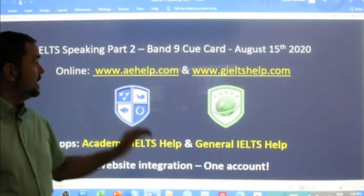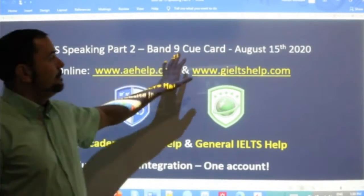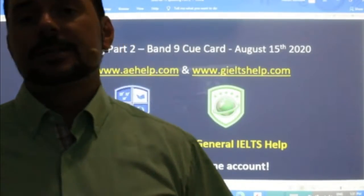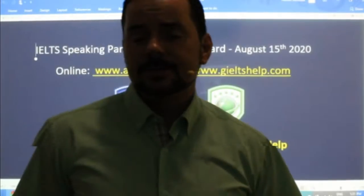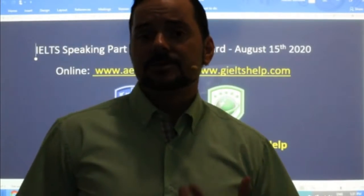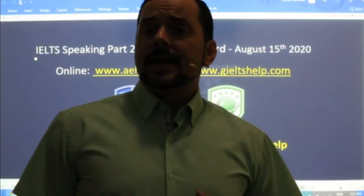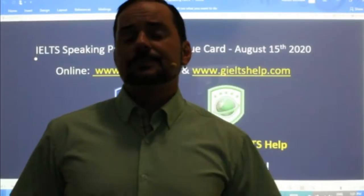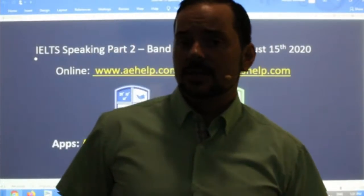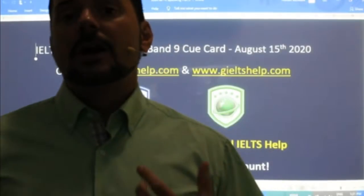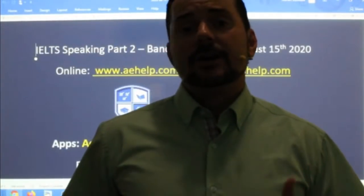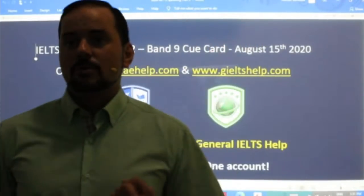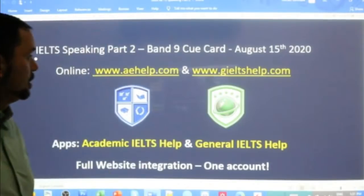This class is a speaking part two, talking about a band nine cue card — how to approach it and of course practicing for it, because one of the most important steps towards a band nine on the speaking section, especially doing a good job on the cue card, is lots of practice. This is not a normal chit-chat or conversation you have in day-to-day life. In everyday life, we usually don't get a list of four or five questions that we have to do a mini presentation for, like in part two of the speaking.